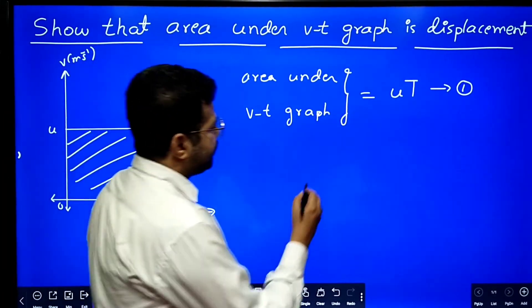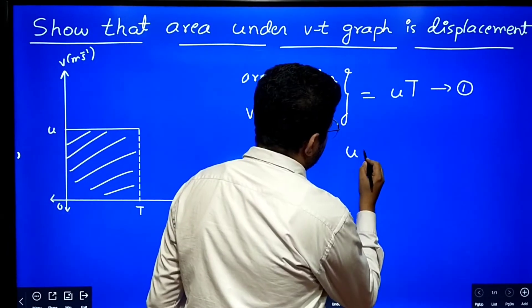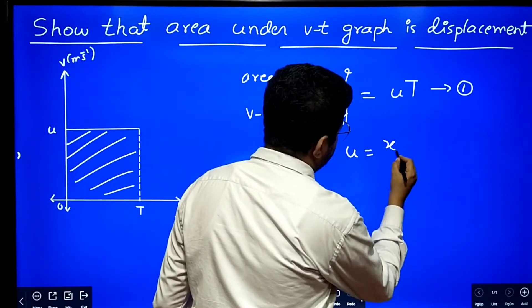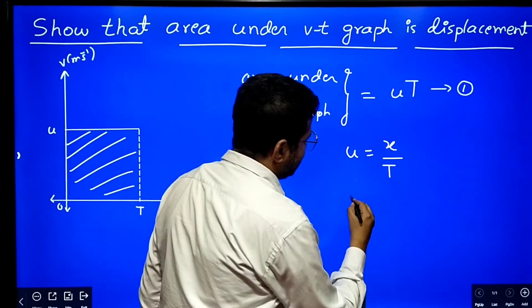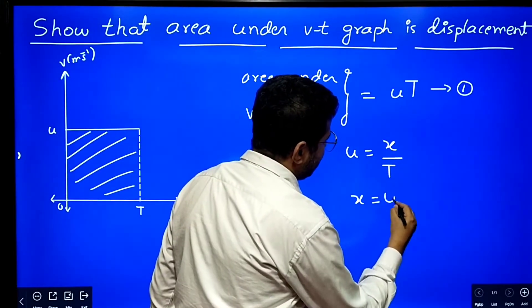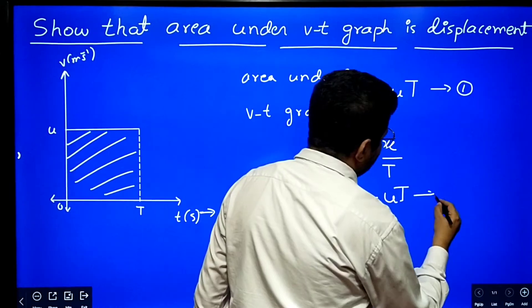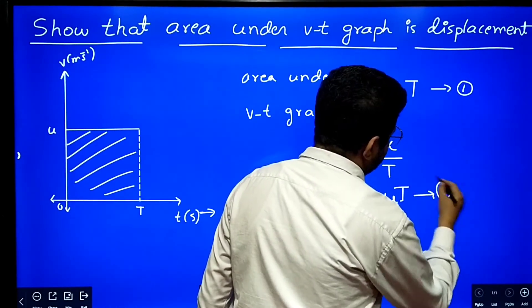Also we know that velocity is equal to displacement by time. Then if you rearrange this equation, displacement is equal to velocity into time. I name this equation as equation number two.